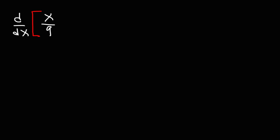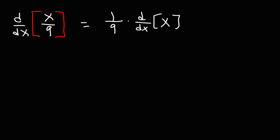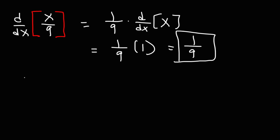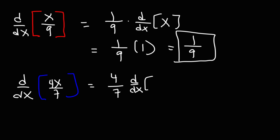Let's say we want to find the derivative of x over 9. It helps if you rewrite the fraction. The 9 is a constant, so you could say this is the same as 1 over 9 times the derivative of x, because 1 over 9 times x is x over 9. And the derivative of x is simply 1 — since the derivative of 5x is 5, 2x is 2, 1x is 1. So the answer is simply 1 over 9. What about the derivative of 4x over 7? This is the same as 4 over 7 times the derivative of x, so it's just 4 over 7.